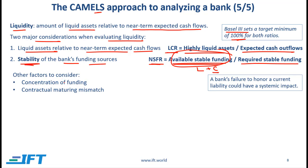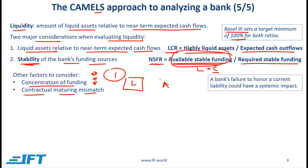There are at least two other factors to consider for liquidity. One is the concentration of funding — if there is just one source of funding, that is a major cause for concern because if that source dries up, there would be a major liquidity issue; having several sources of funding is a positive. Another factor is contractual maturity mismatch: looking at the maturity of liabilities such as deposits relative to the maturity of assets such as bank loans, and ideally minimizing this mismatch. A bank's failure to honor a current liability could have a major systemic impact — if depositors want to withdraw and the bank can't meet that requirement, there will be a bank run with significant negative impact on the economy.